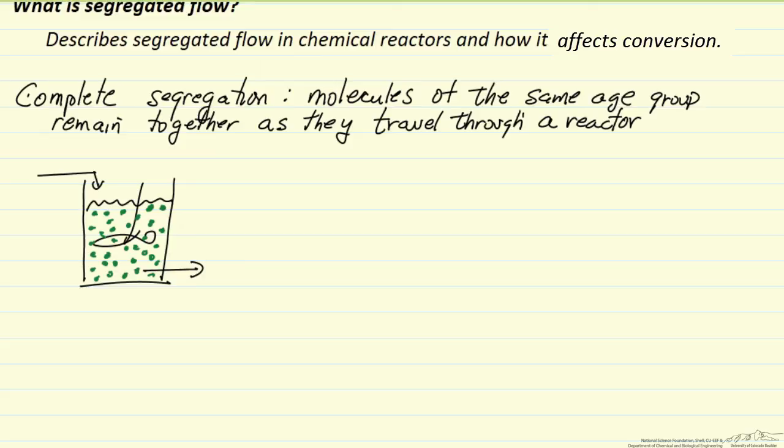And so these green dots, which are small and I just exaggerated the scale here just for visualization, these green dots then don't mix with each other, and how much a reaction occurs in a given packet of molecules is a function of the residence time distribution. How long does a given packet of green molecules spend in the reactor?